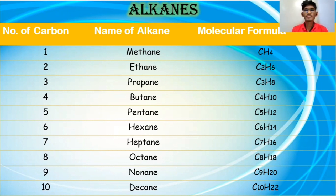One carbon: methane. Two: ethane. Three: propane. Four: butane. Five: pentane. Six: hexane. Seven: heptane. Eight: octane. Nine: nonane. And the 10th one is decane.